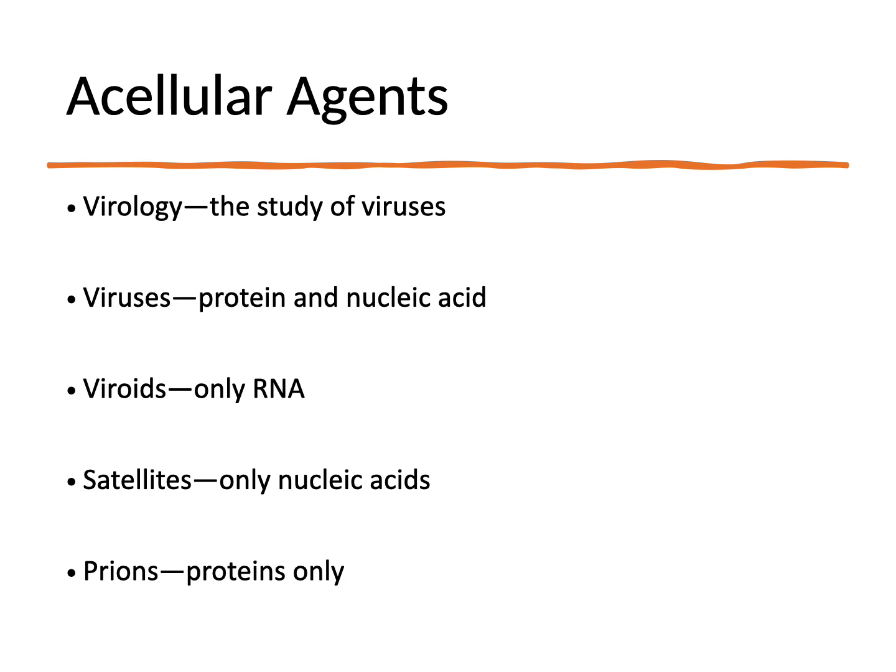Besides the genome, there are proteins that make up the capsid. Together, those make up the nucleocapsid. We can also have glycoproteins and membranes involved. There are also viroids — viroids are only RNA, with no protein portion; it's just naked RNA that is infectious, and we see viroids infecting plants. Satellites are only nucleic acids, which could be DNA. Prions are protein only, which is very interesting because of central dogma — we need DNA to make RNA to make proteins. But prions can actually recruit other proteins to misfold.